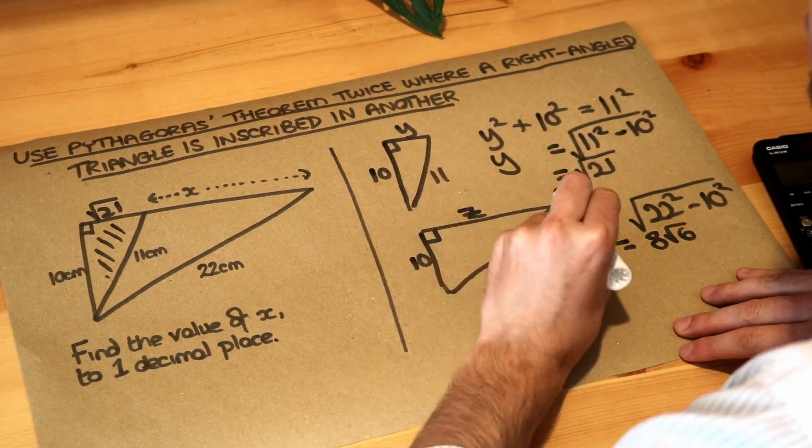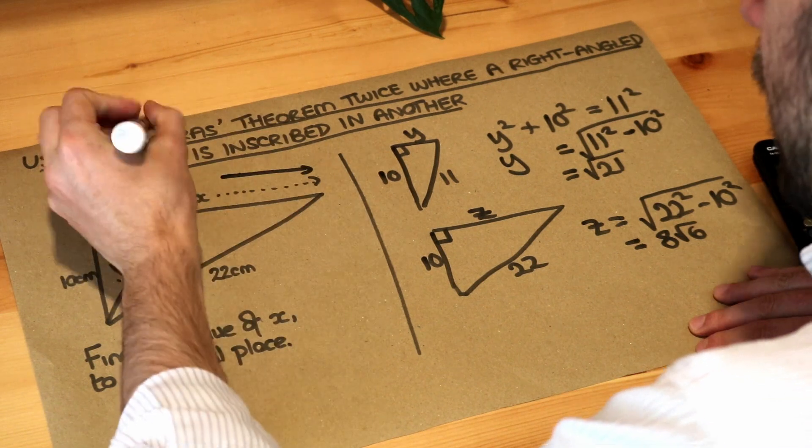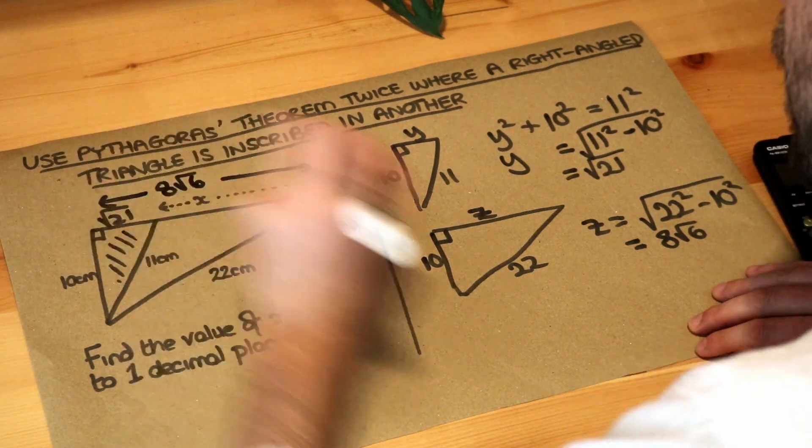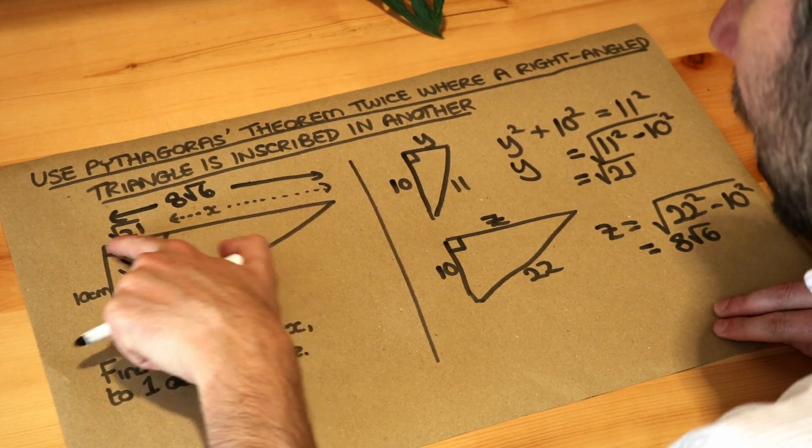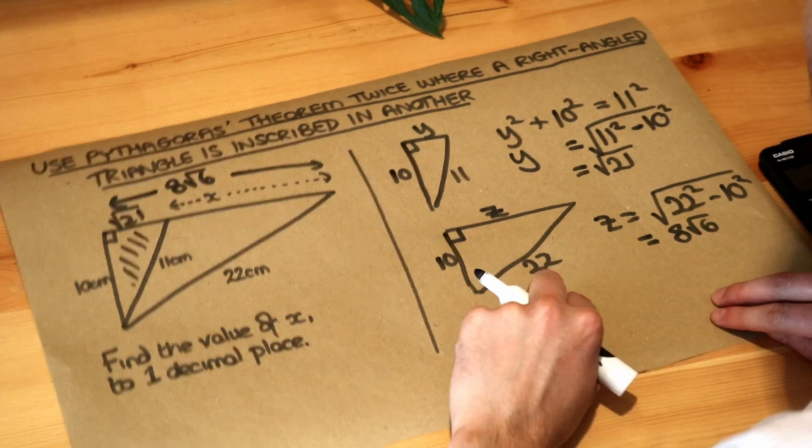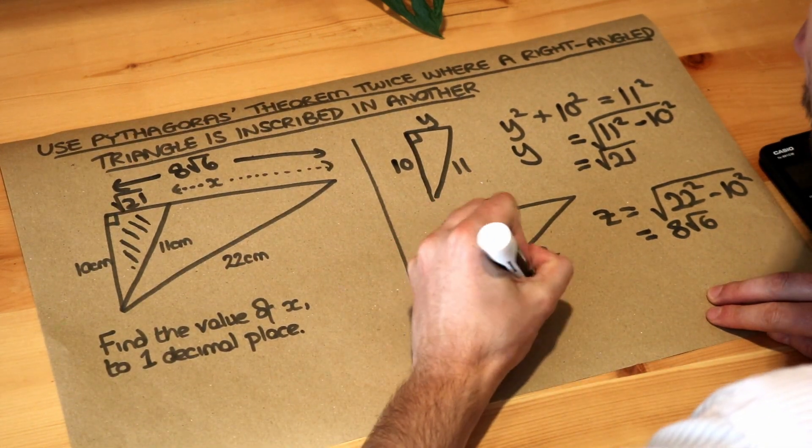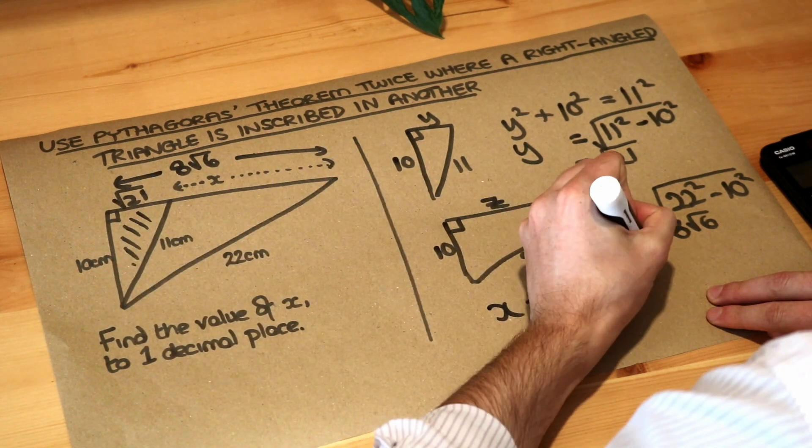So now we know this length which is the full length across the triangle we know that is 8 root 6. So if you think about it if the total length is 8 root 6 and this bit of length here is root 21 we know that x is just 8 root 6 minus that root 21. So x is the 8 root 6 minus the root 21.